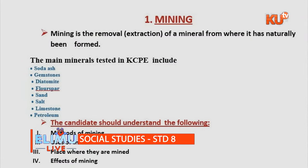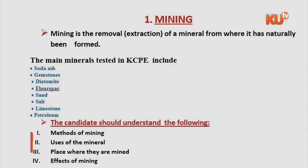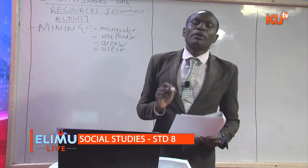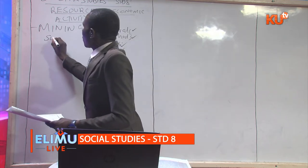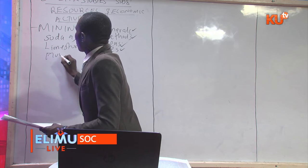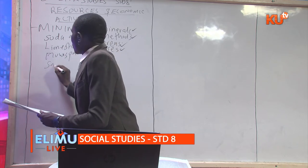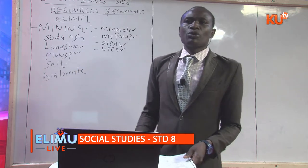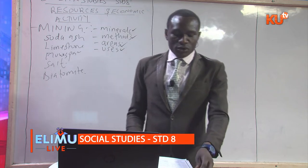We have diatomite, gemstone, salt, gold, soda ash, and petroleum. These minerals are mined using different methods of mining. Most of the minerals mined in Kenya — soda ash, limestone, lusper, salt, and diatomite — are the main minerals mined in Kenya. As a candidate, you should be able to know where they are located, their uses, and also the place where they are mined. On mining, you should be able to know minerals, method of mining, areas, and uses.